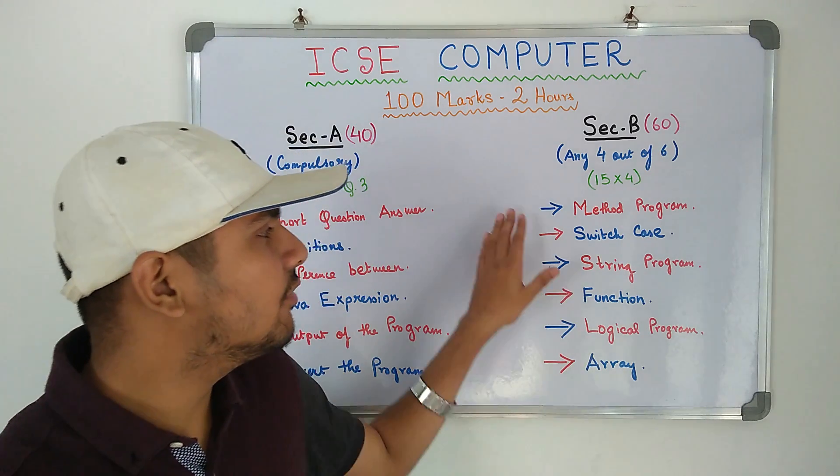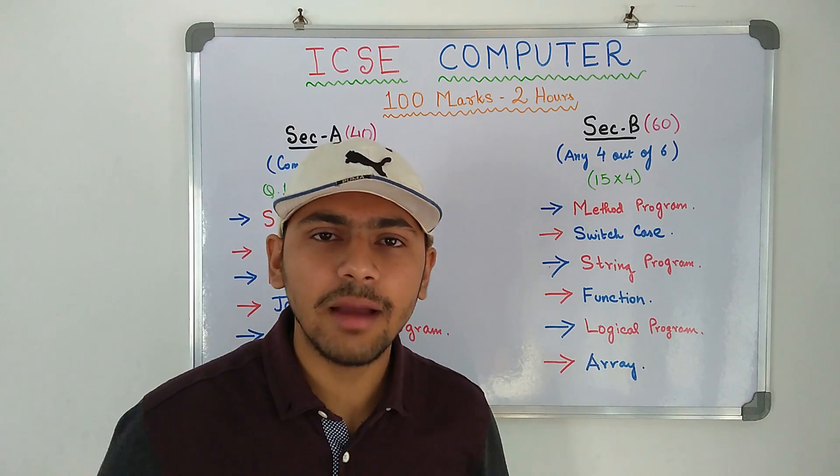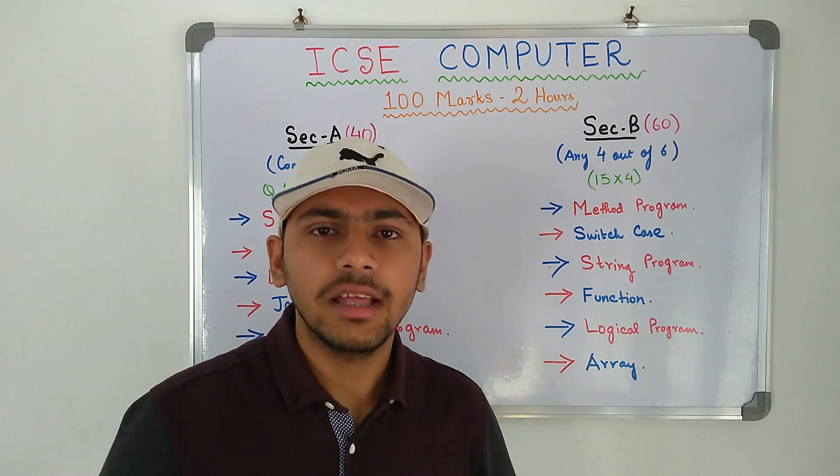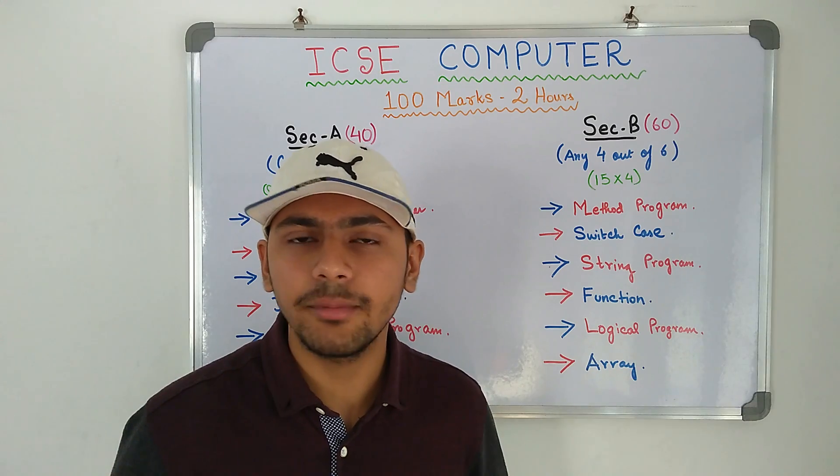What type of programs come? The first one is a method program. Method program is the first program that you see when you see a computer applications question paper. The long program in which you have to define the class, instance variable, method variables and all that.